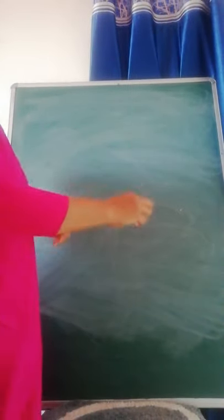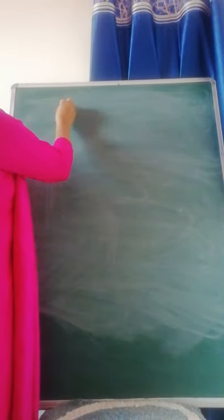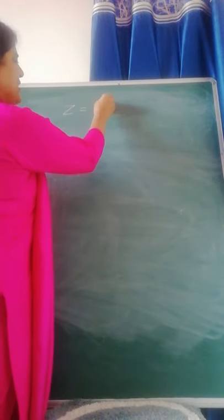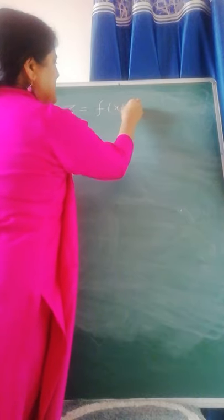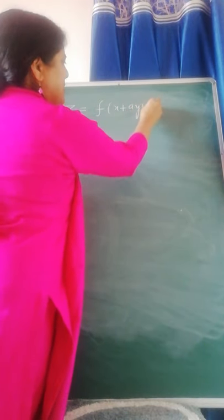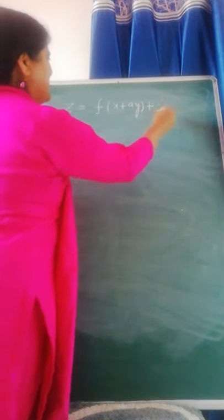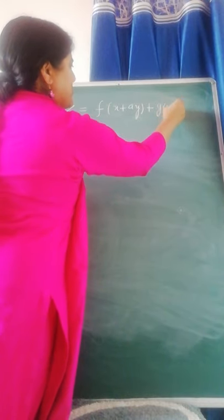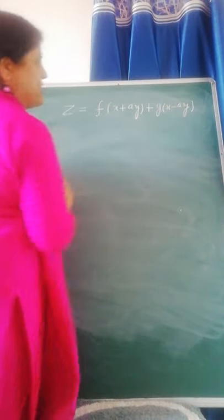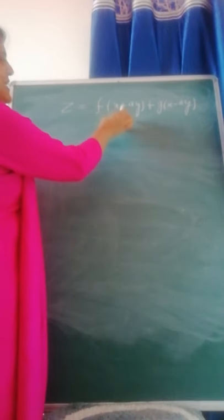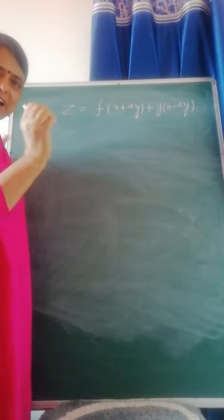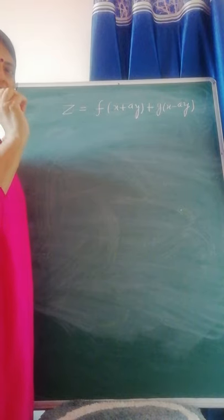Good afternoon dear students. Today's question is: z is equal to f(x + ay) plus g(x - ay), where f and g are arbitrary functions. From this relation we have to construct a partial differential equation.